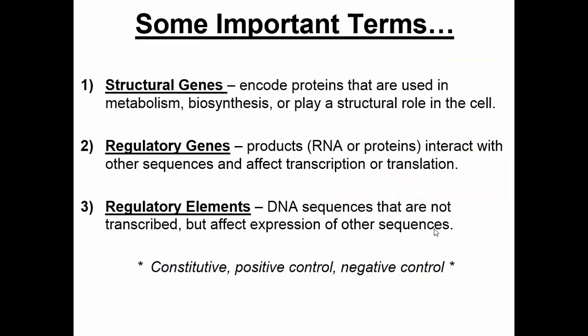Before we focus on that, we need to know some important terms. The first term is structural genes — these are genes that encode for a protein that does something in the cell. Regulatory genes are genes or DNA sequences that encode for RNA or proteins, but rather than doing things themselves, they affect the transcription and translation of other sequences. The final category is regulatory elements — DNA sequences that are not transcribed, but are still very important because they affect the expression of other DNA sequences. An example of a regulatory element would be a promoter.